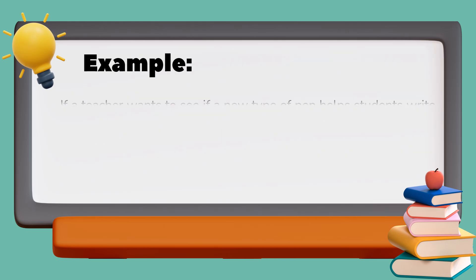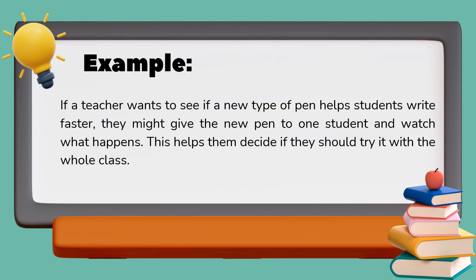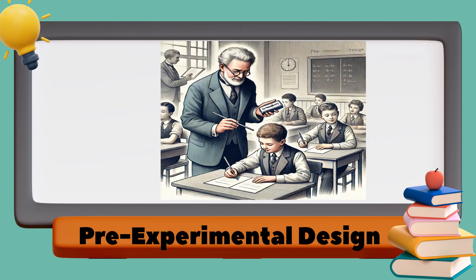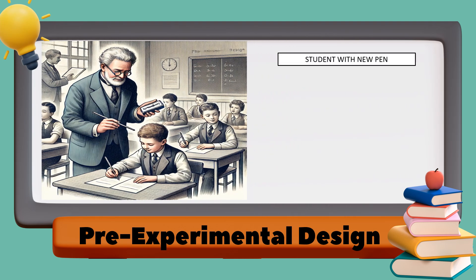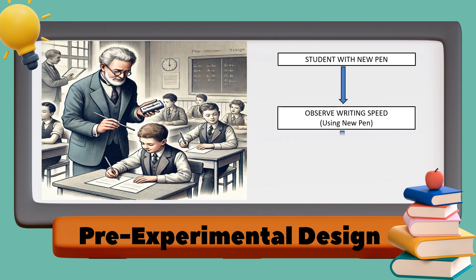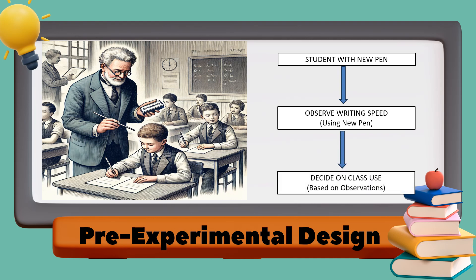For example, if a teacher wants to see if a new type of pen helps students write faster, they might give the new pen to one student and watch what happens. This helps them decide if they should try it with the whole class. This illustration shows how a teacher tests the new pen with one student, observes the writing speed, and decides whether to use the pen with the entire class.